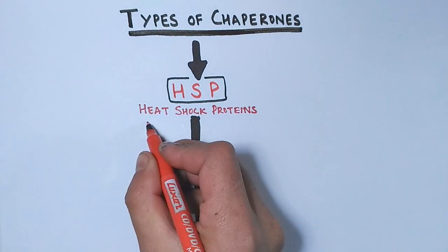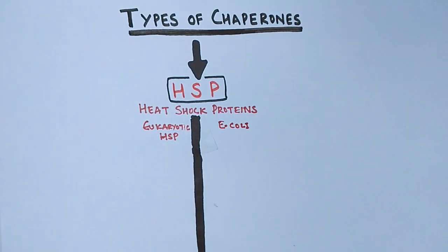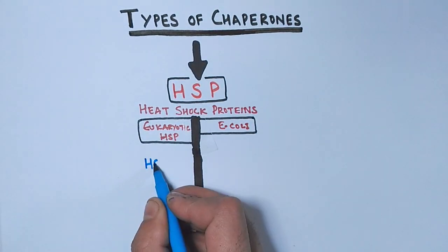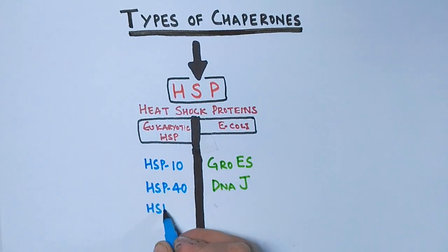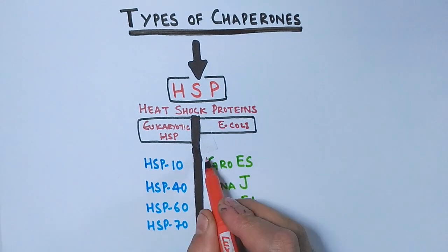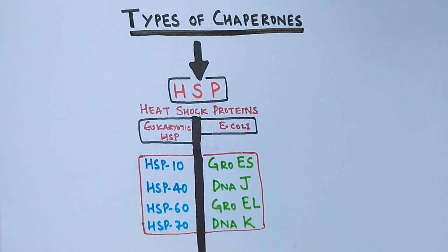The heat shock proteins are found in both eukaryotes as well as in prokaryotes. On the left we have eukaryotic HSPs and on the right we have E. coli heat shock proteins with the same functions but with different names.